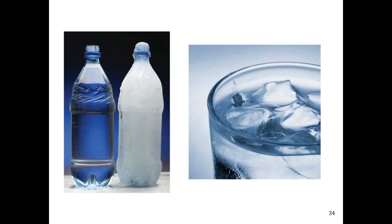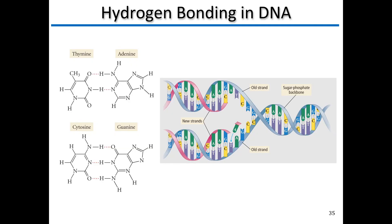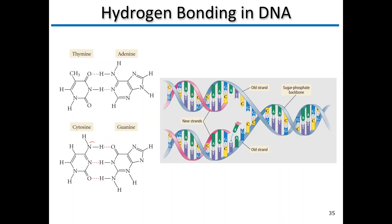Interestingly, this is also one of the ways that bonding in our DNA works. You have different types of hydrogen bonding between thiamine, adenine, cysteine, and guanine. One thing to point out: here we have an N-H but it's hydrogen bonding with an oxygen — so the electronegative atoms don't have to be the same. You just need that interaction: an electronegative atom with a hydrogen attached, and a lone pair. This is what helps to form our strands of DNA.